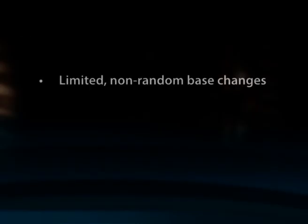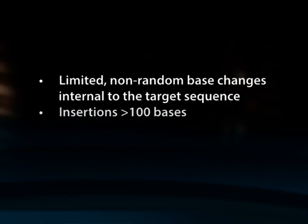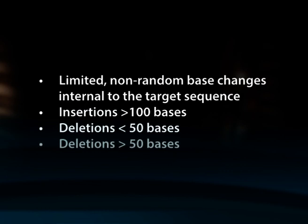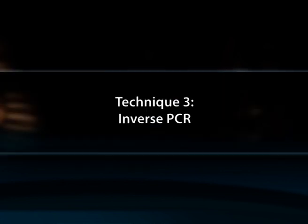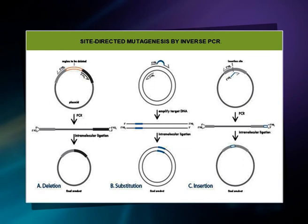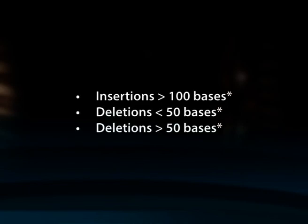Technique 2 can be used for limited non-random base changes internal to the target sequence, insertions greater than 100 bases, deletions less than 50 bases, and deletions greater than 50 bases. Technique 3: Inverse PCR. Inverse PCR enables amplification of a region using primers oriented in the reverse direction. An adaptation of this method introduces mutations in previously cloned sequences: using primers incorporating the desired change, an entire circular plasmid is amplified to delete, change or insert the desired sequence. This technique can be used for insertions greater than 100 bases, deletions less than 50 bases, and deletions greater than 50 bases.